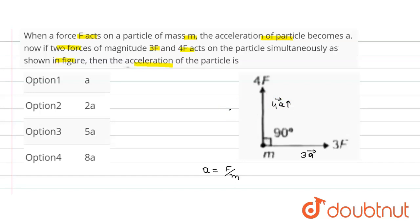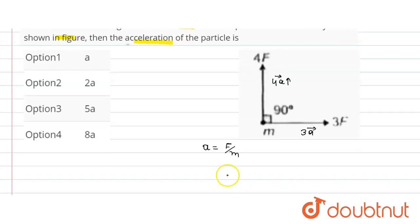And now 3F is acting on a mass, so acceleration will be 3a and 4a, okay. So net acceleration, therefore a_net is equal to how much?